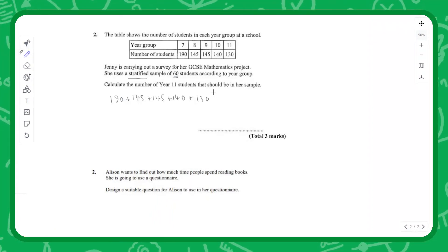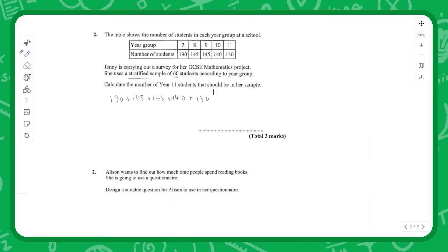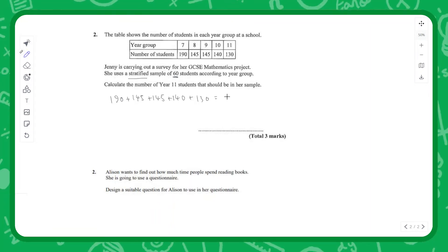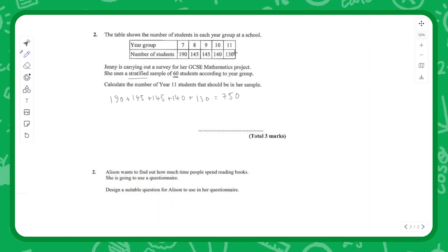145 plus 145 plus 145 plus 140 plus 130... we have 750 students in total at this school. How can we work out what this is as a fraction of the total?